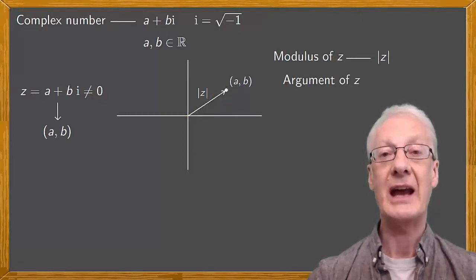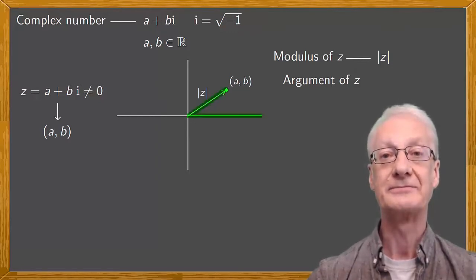The argument is defined as the angle formed by the position vector and the positive part of the x-axis. We'll represent it by the angle alpha.